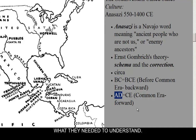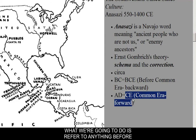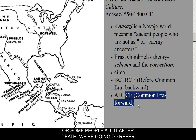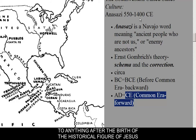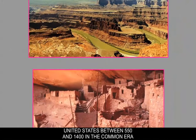When we study dates, we won't be using BC and AD. Anything before the Common Era — before the birth of the historical figure of Jesus — will be referred to as BCE, Before the Common Era. Instead of Anno Domini, anything after that birth will be referred to as CE, the Common Era, because it's a common dating system. So the Anasazi lived in the southwestern United States between 550 and 1400 in the Common Era.